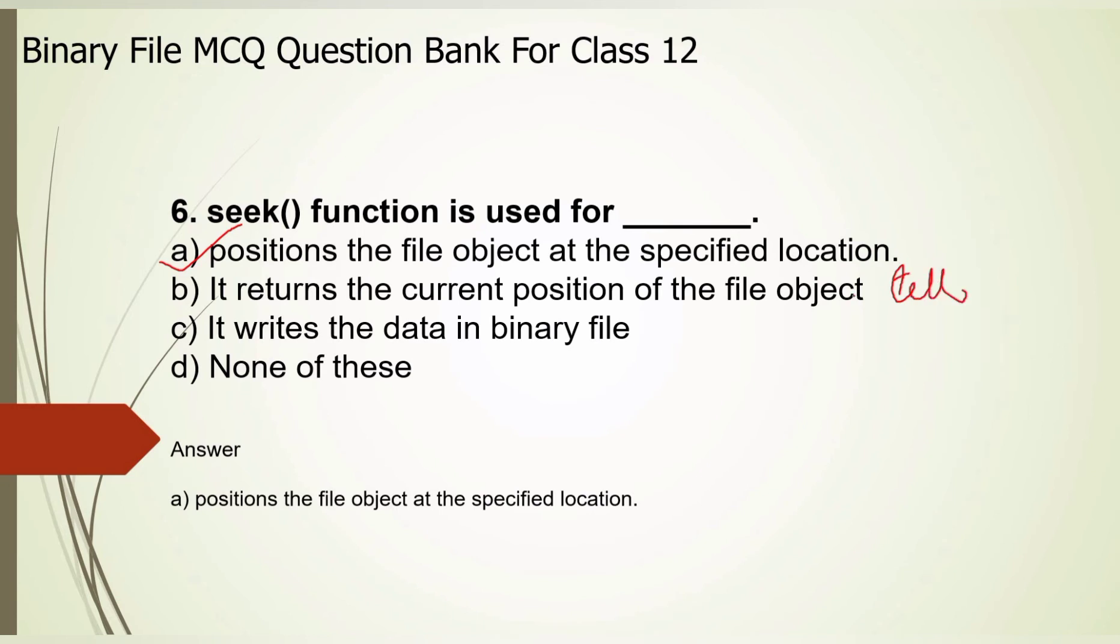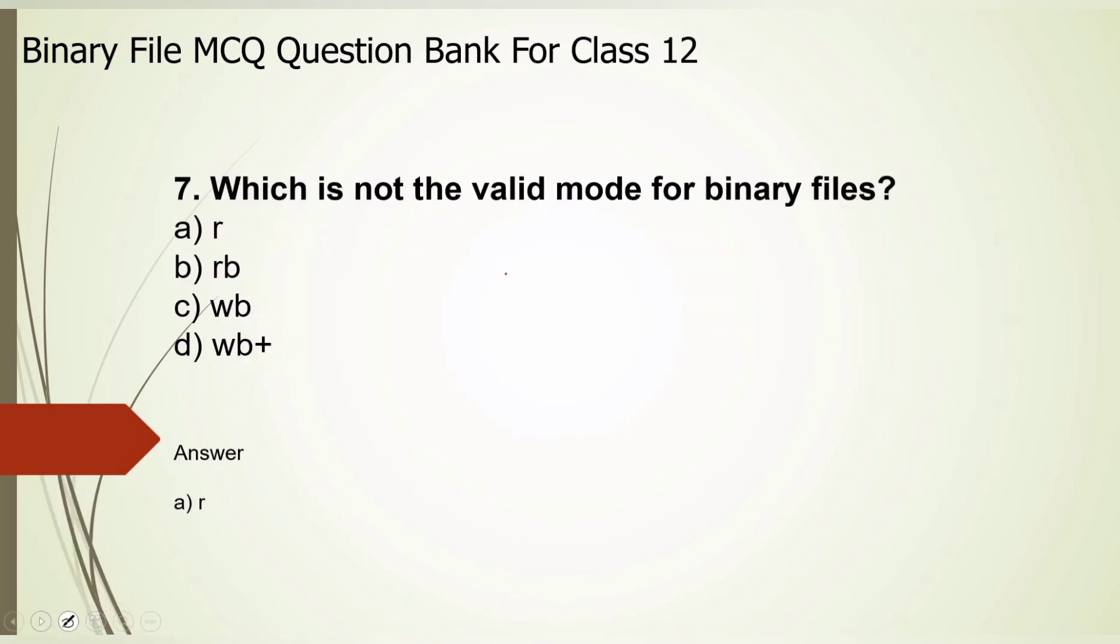In question number 7, which is not the valid mode for binary files? Here in B, C, D we are having rb, wb and wb+. The answer will be A, which is r. It is used to read a text file.